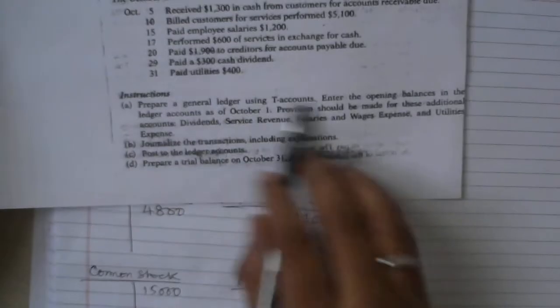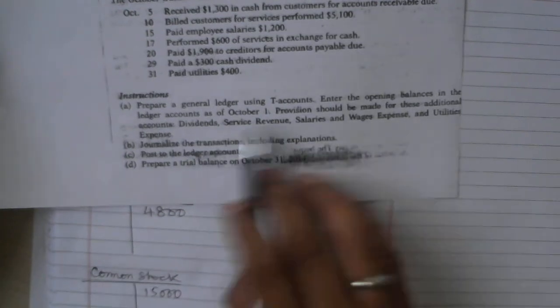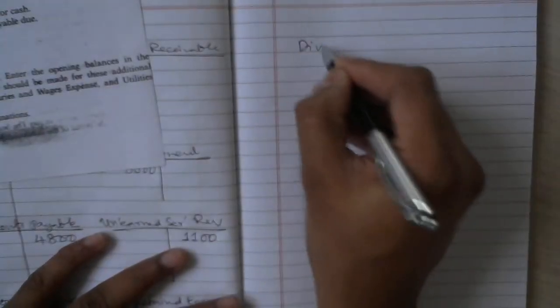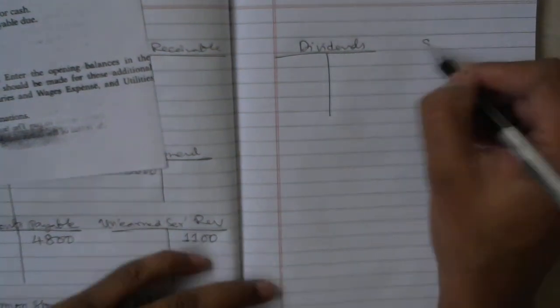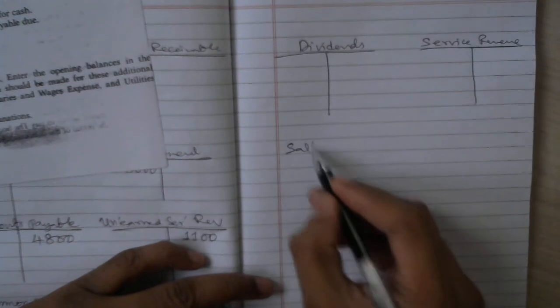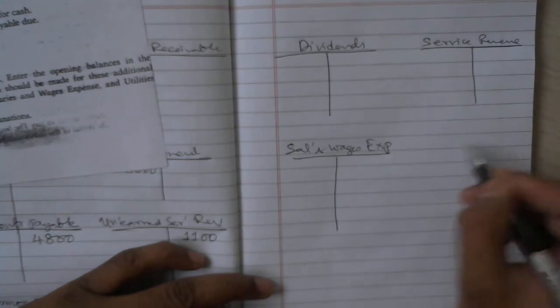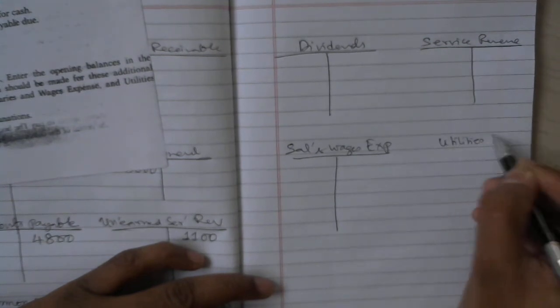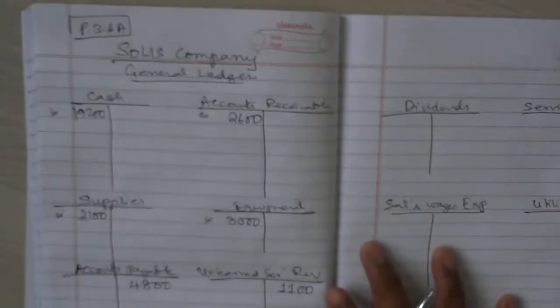The question also states that provision should be made for additional accounts: dividends, service revenue, salaries and wages expense, and utilities expense. So I'll add those four additional T-accounts. These will be useful as transactions are recorded.